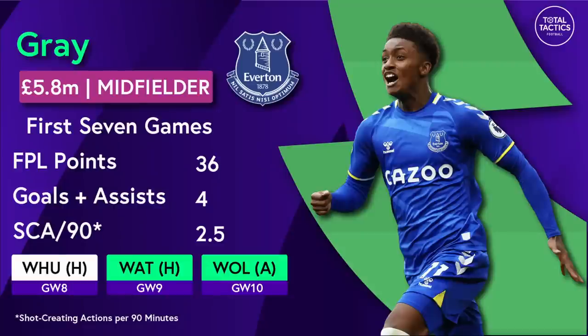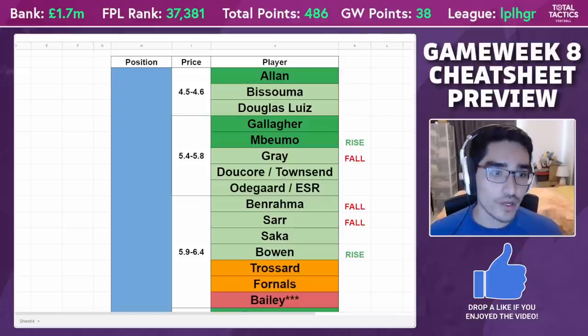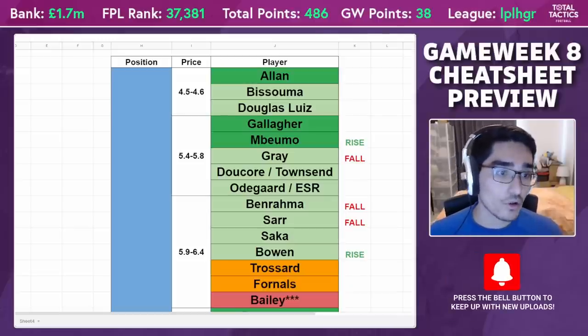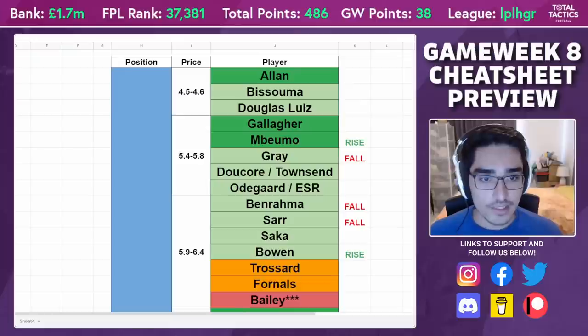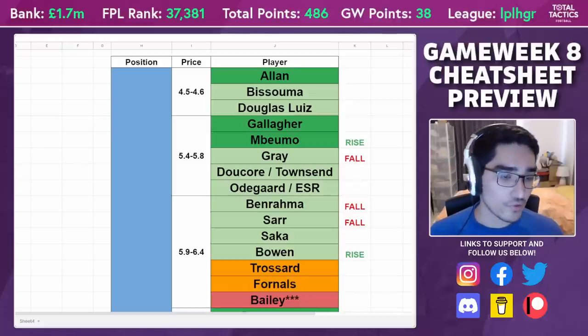Gray has to be rated as a fall. We've seen a lot of impact spread across the team — Doucouré and Townsend — and that means Gray's chances of hauling in tougher upcoming fixtures are probably slightly less. Even though he's quite a pivotal player — for example in the counter-attack where Townsend scored, Gray was holding the ball up and creating the separation from the defender — I have to say his time as a top-tier FPL asset at his price range is probably gone.